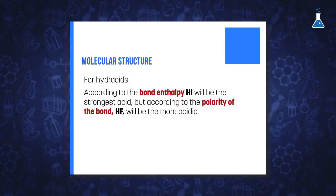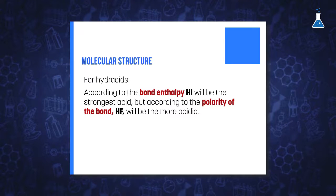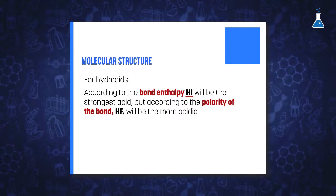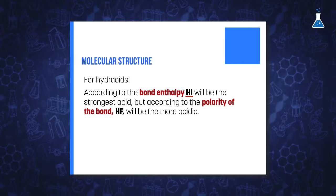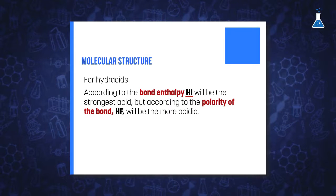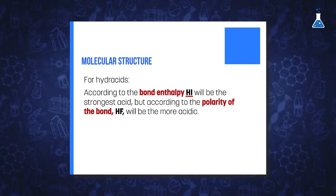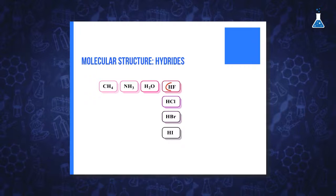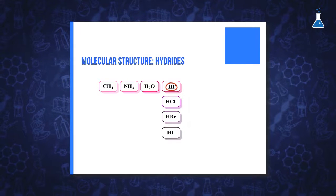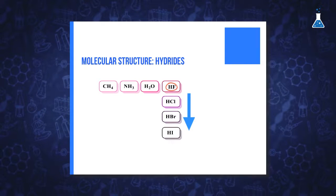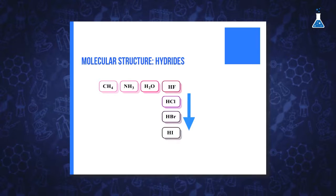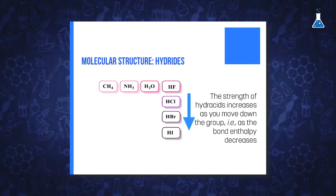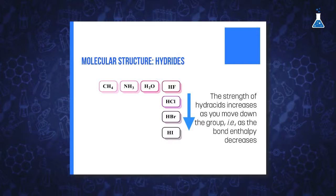If we want to estimate the acid strength of the hydrohalic acids, hydroiodic acid will be the strongest acid according to bond enthalpy, due to the fact that this bond is longer than the rest. But if we take into account the polarity of the bond, hydrofluoric acid would be the more acidic. So what factor is the driving force to determine the acidity? In the case of hydrohalic acids, it is the bond enthalpy.